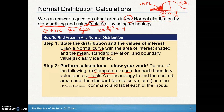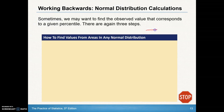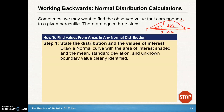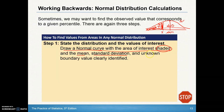We're going to move on and look at going backwards. Sometimes you have a normal distribution with a stated mean and standard deviation, and you're interested in finding the score that separates the bottom 40% from the top 60% — what that x value is at that boundary. We're going to draw the normal curve with the area of interest shaded, indicate the mean, the standard deviation, and then identify that unknown boundary value.